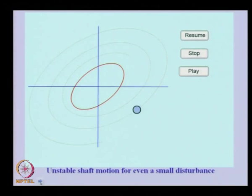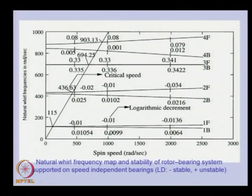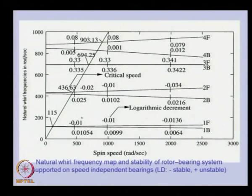You can also see the Campbell diagram combined with logarithmic decrements. The sign of the logarithmic decrement determines whether the system is stable or unstable — when negative, the system is stable; when positive, it is unstable. This allows us to identify which modes are stable or unstable and after what speed they become stable or unstable.